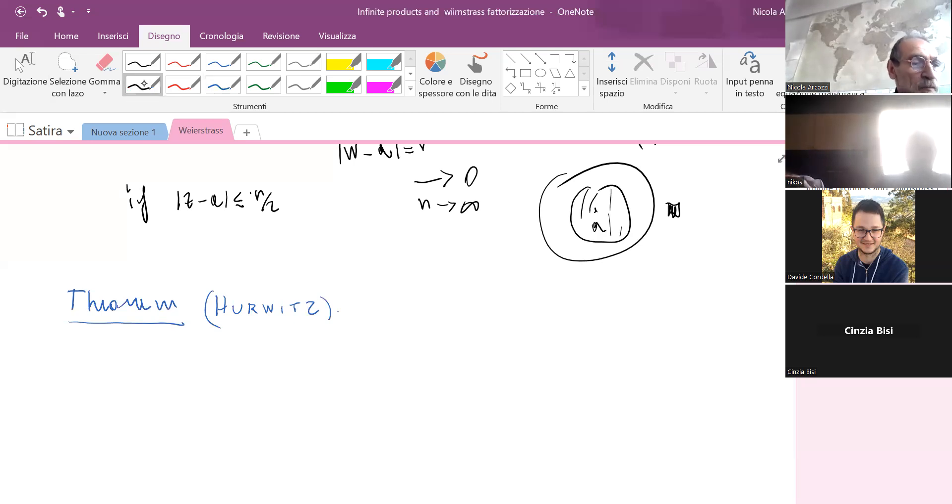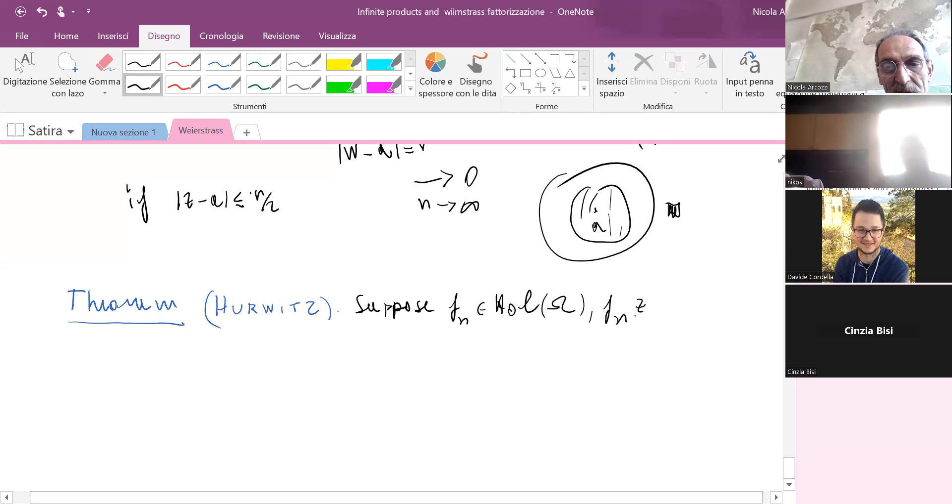This theorem says that suppose I have holomorphic functions fn in some omega, where fn is different than zero for all z, and fn converges to f uniformly on compact sets.